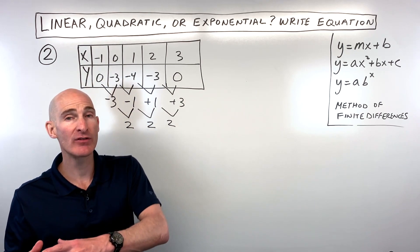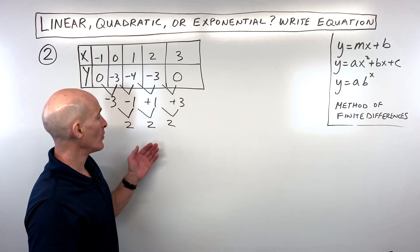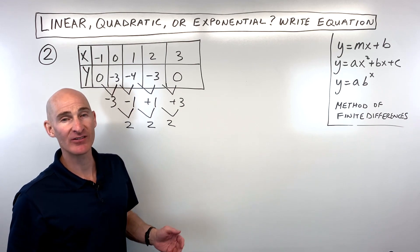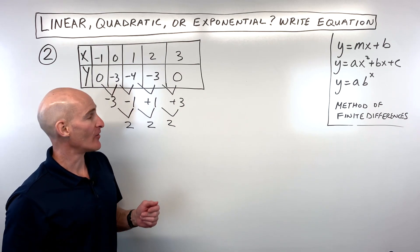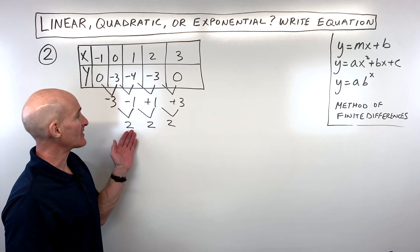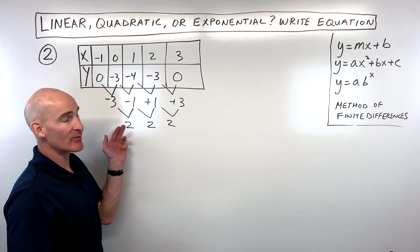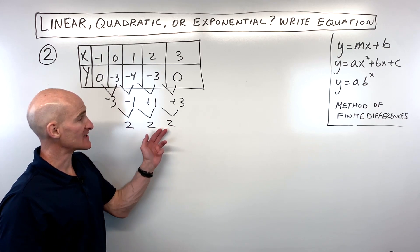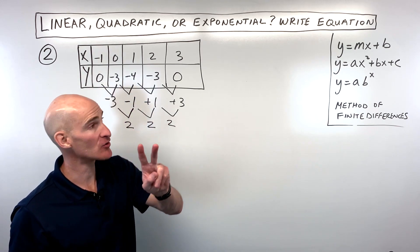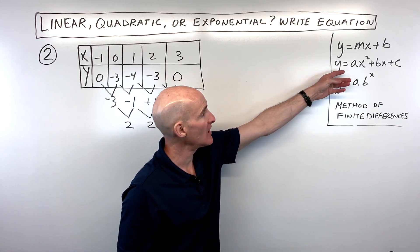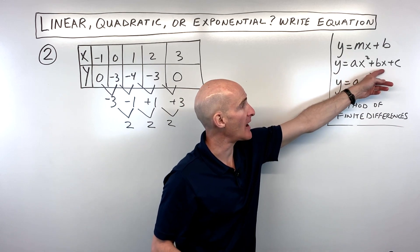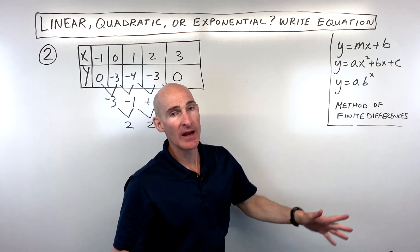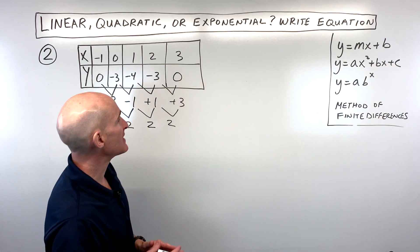It doesn't matter whether the constant is 5, 9, or 12 — the key is that the second time we subtracted we got the same number. That tells us it's a second degree equation — a quadratic equation in the form y equals ax squared plus bx plus c.